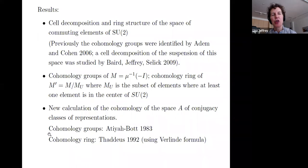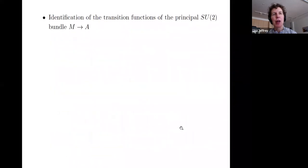We have a new calculation of the cohomology ring of the space of conjugacy classes. The cohomology groups or Betti numbers were identified by Atiyah and Bott, and the cohomology ring was identified by Thaddeus in the general case. Thaddeus used the Verlinde formula to obtain his results. And we identified the transition functions of this principal SU(2) bundle.